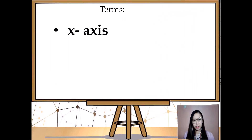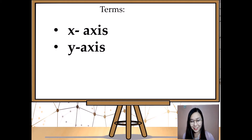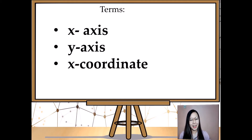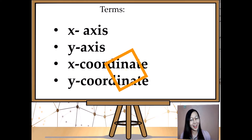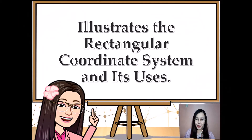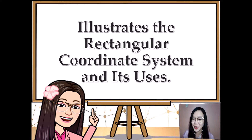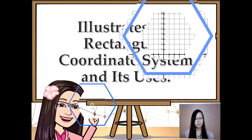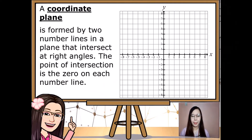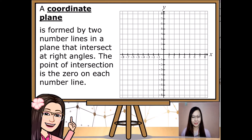In our terminology, we have the x-axis. If we have an x-axis, we also have the y-axis. If we have an x-coordinate, we also have the y-coordinate. A coordinate plane is formed by two number lines in a plane that intersect at right angles. The point of intersection is zero on each number line.